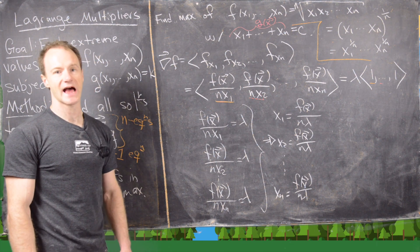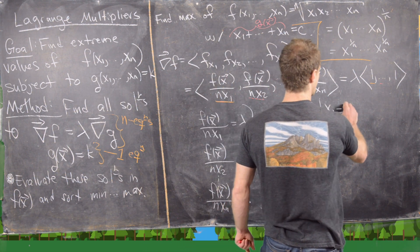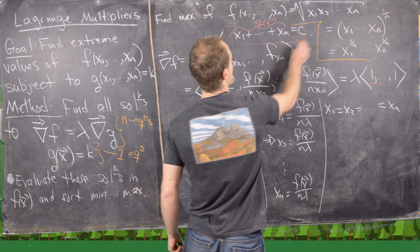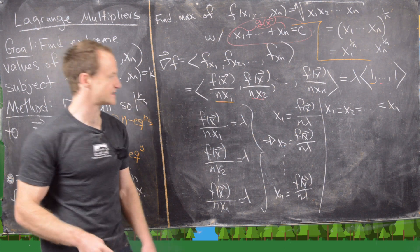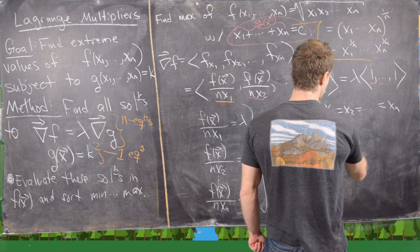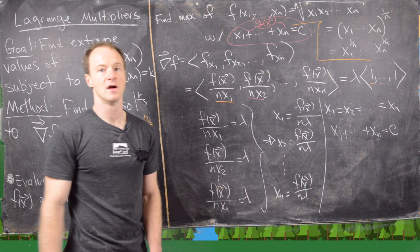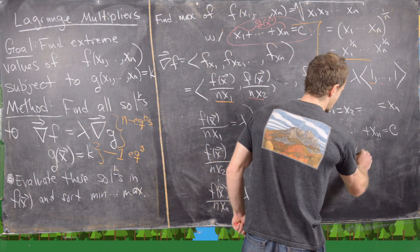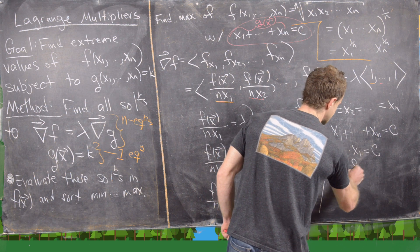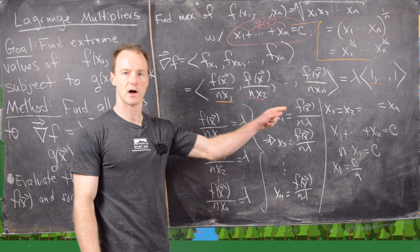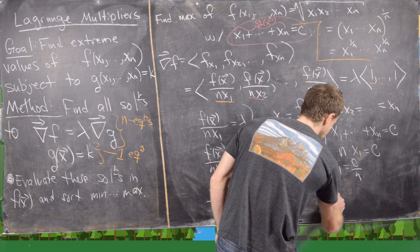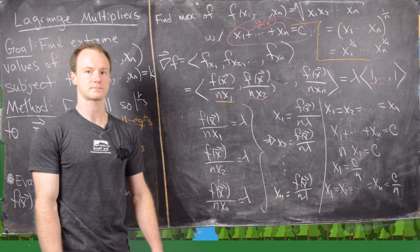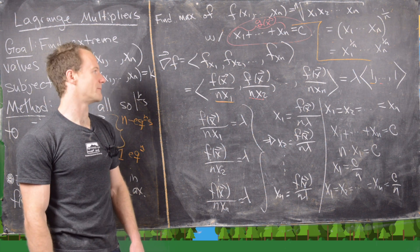Since all n equations say f(x)/(nxi) equals lambda, they all give the same value for each xi. Specifically, x1 equals x2 equals … equals xn equals f(x) divided by n lambda. Using the constraint x1 plus … plus xn equals c, and since all xi are equal, we get n times x1 equals c, so x1 equals c over n. Therefore every xi equals c over n, and that is the point at which the maximum occurs.